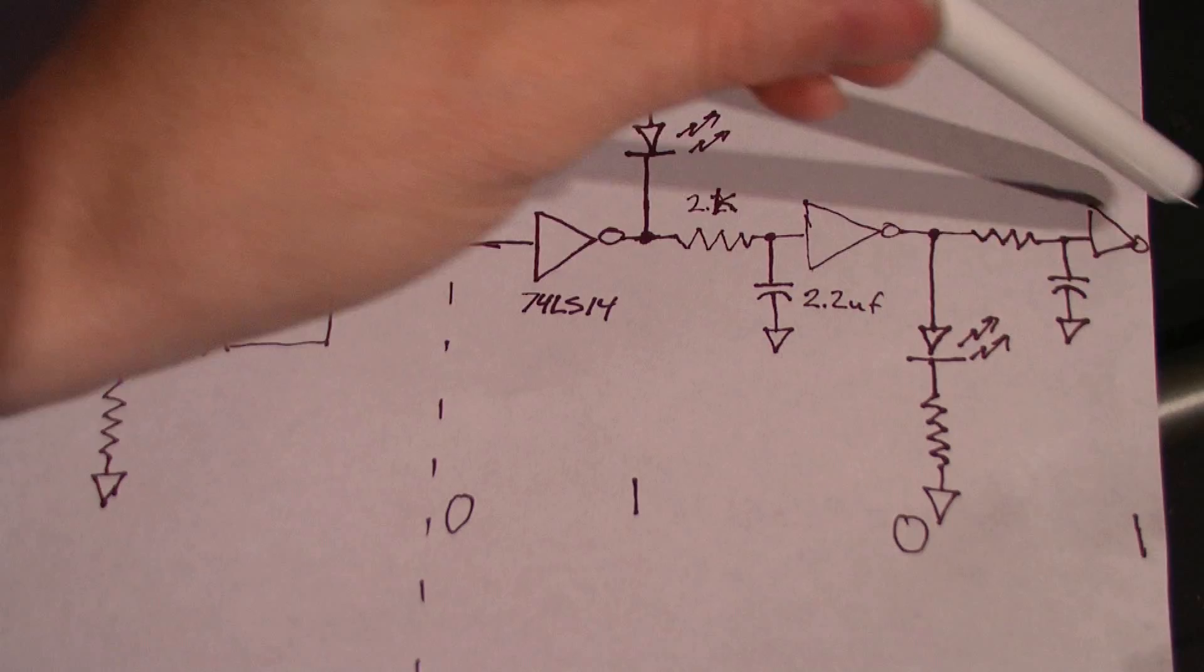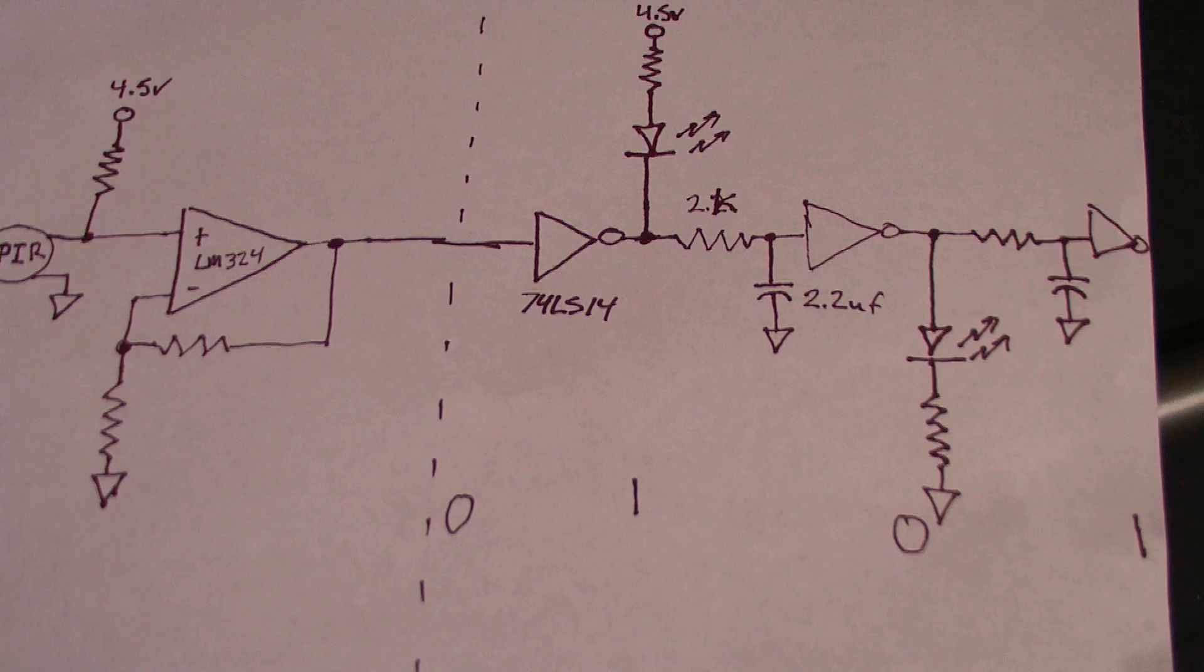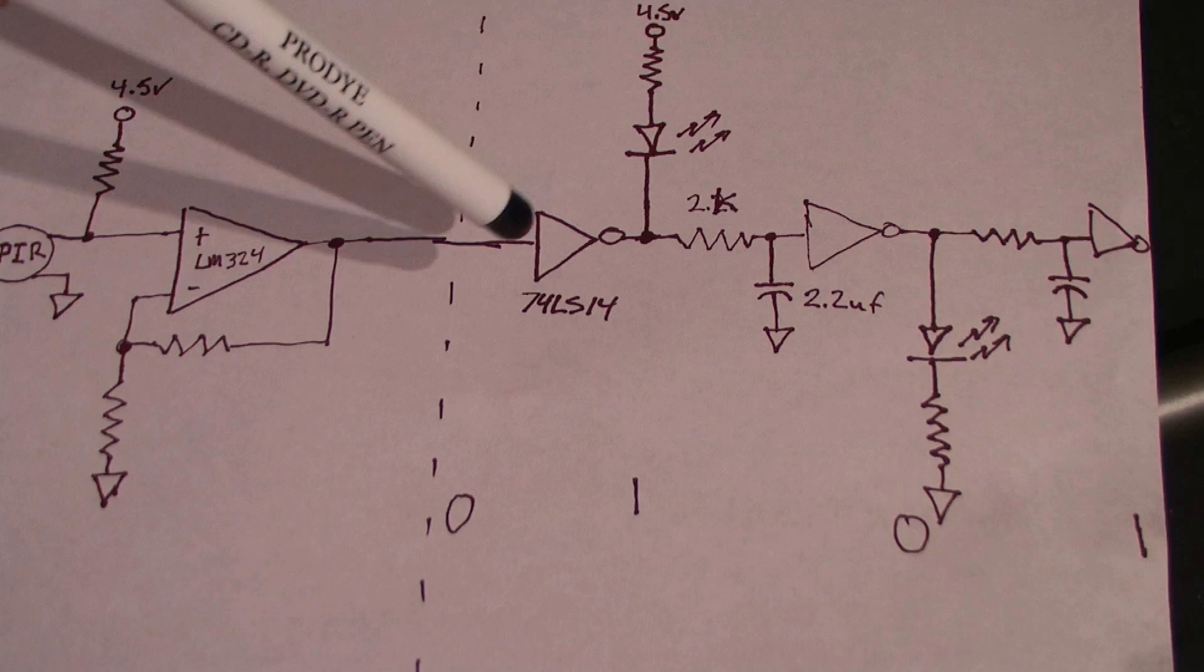I have the LEDs configured in sync and source configurations between each stage alternating, so that there's a state when everything's propagated through, that all the LEDs will be off, and another state when everything's propagated through, that all the LEDs are on.